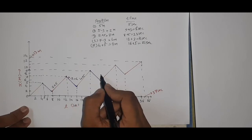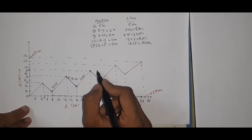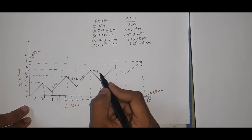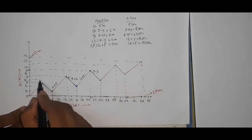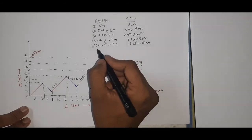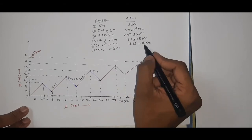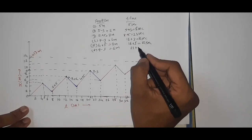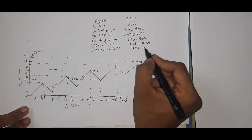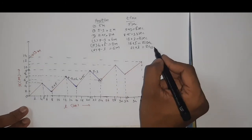Then 3 steps backward as usual. 9 minus 3 is 6 meters. Time is 21 plus 3, which is 24 seconds. So at 24 seconds, position is 6 meters.